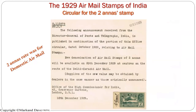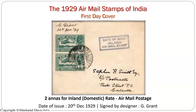Now we come to the two annas. Two annas was the rate for domestic airmail — for mail transmitted within India. Here we have the circular confirming the two-anna stamp would be released on 20th December. So: 4th November 1929 for the five stamps, and 20th December for the two annas. Again, here is a beautiful first day cover with the signature of the designer Mr. Grant on top, dated 20th December 1929, addressed to Stephen Smith.